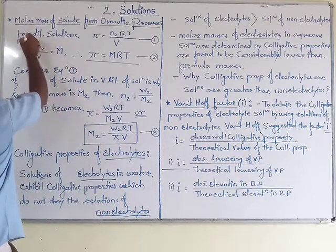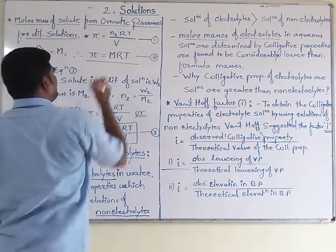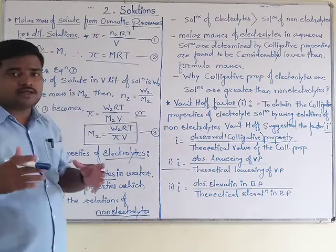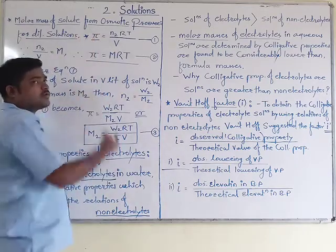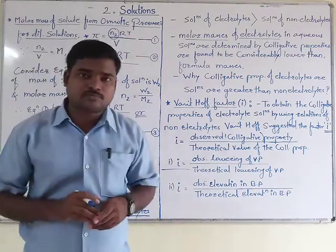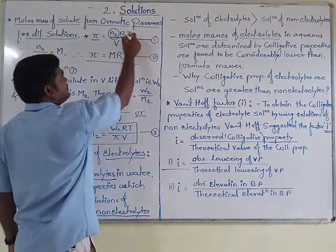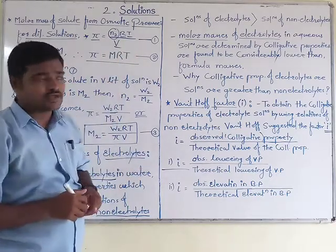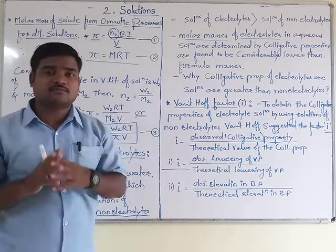We already derived this equation in our last video lecture. Today we will see the topic of molar mass of solute from osmotic pressure — in other words, the relationship between molar mass of solute and osmotic pressure. The equation is π = n₂RT/V, which we have termed equation number 1.